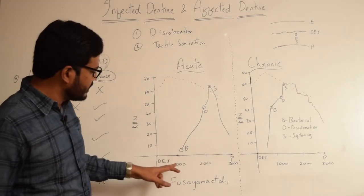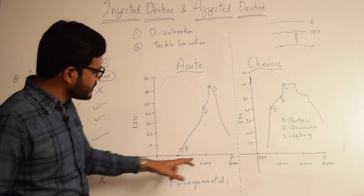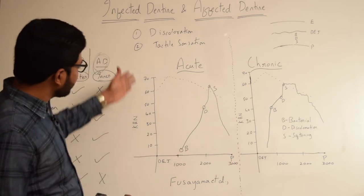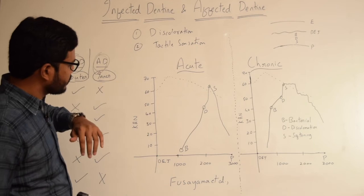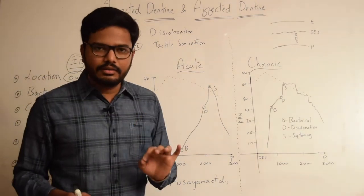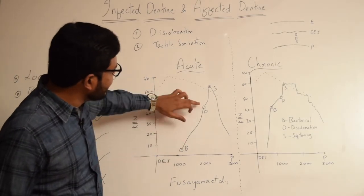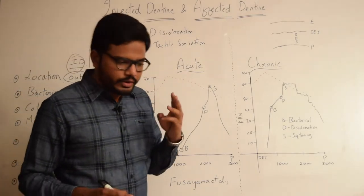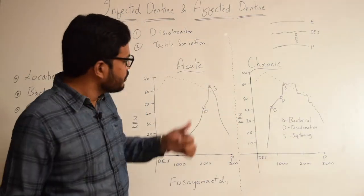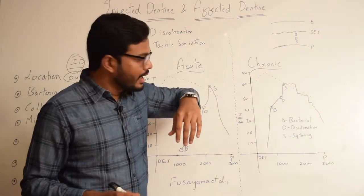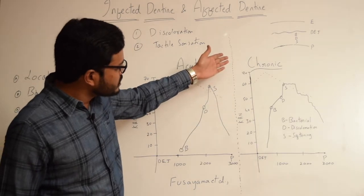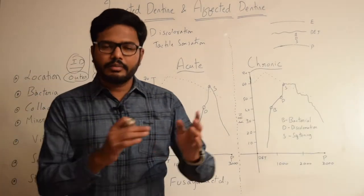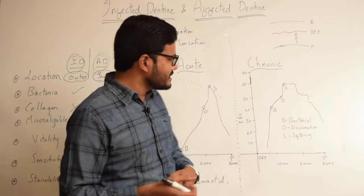On the x-axis you have the depth of penetration of bacteria — on the left is the DEJ and on the right is the pulpal chamber, so depth increases from DEJ towards the pulp. On the y-axis you have hardness values ranging from 10 to 70. These graphs give us information regarding the distance between the different fronts B, D, and S, their level within the dentin, and their hardness values — specifically the proximity between B, D, and S, the hardness of those zones, and their relative depth.